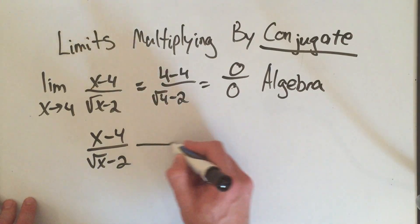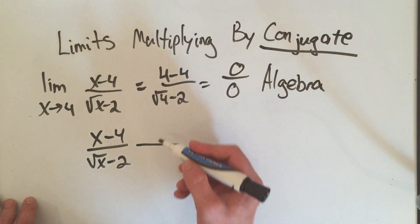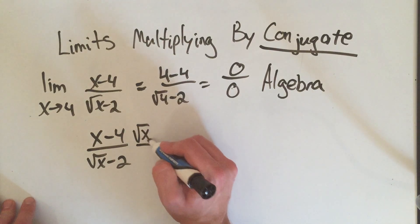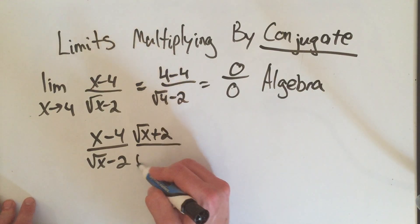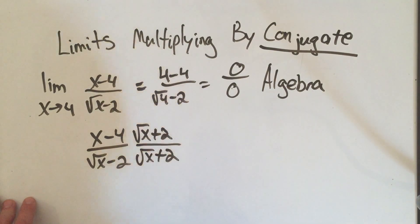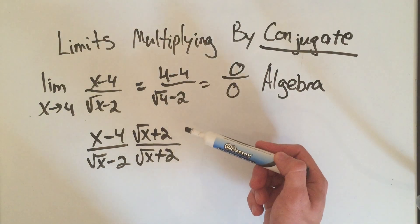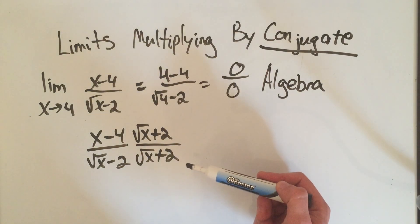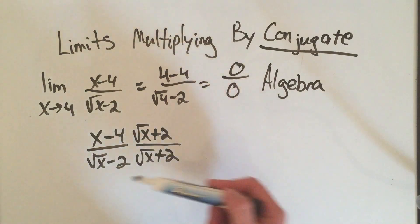That means I multiply by a special 1. I multiply by the square root of x plus 2 over the square root of x plus 2. So I copied the thing with the square root, and I just flipped the sign. And you'll notice that square root of x plus 2 over square root of x plus 2, that's a fancy way of writing 1, so I'm allowed to do this algebraically.